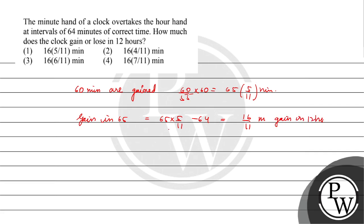If you further solve, it will be 16 by 11 into 12 into 60 by 64, right? That will further give you 180 by 11, which can be written as 16 4 by 11, and part B will be the correct answer.